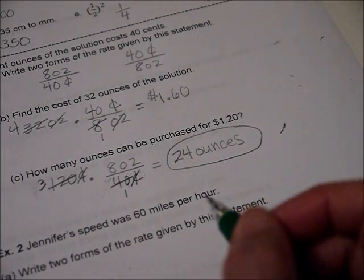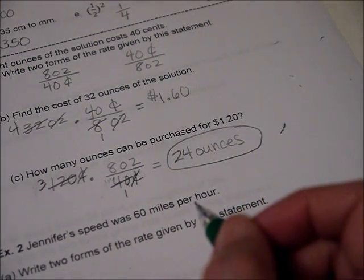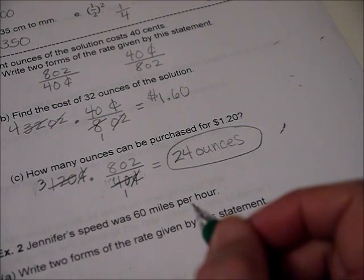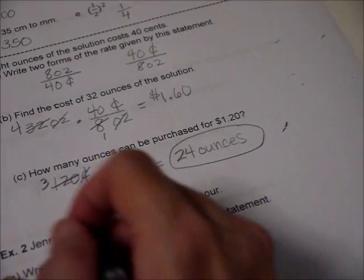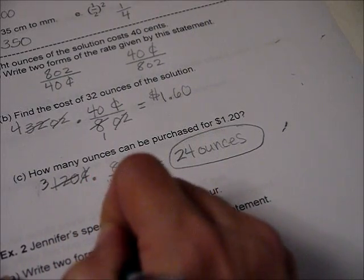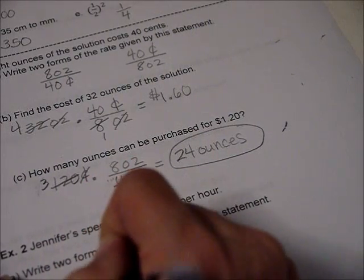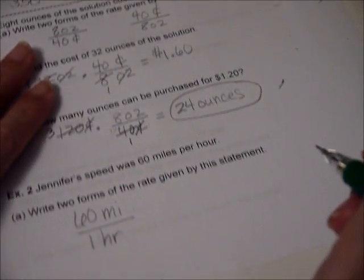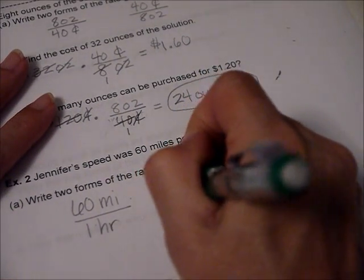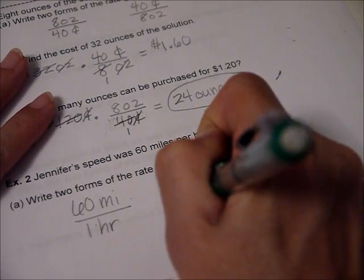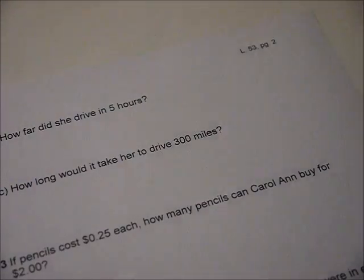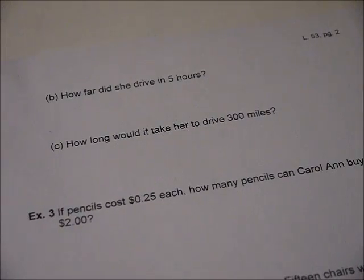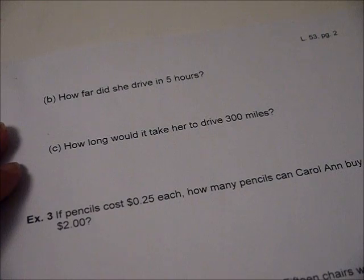It happens a lot with speed. Jennifer's speed was 60 miles per hour. Write two forms of the rate given by this statement. So 60 miles, one hour, or one hour and 60 miles on the bottom. Now we're going to put that into use.